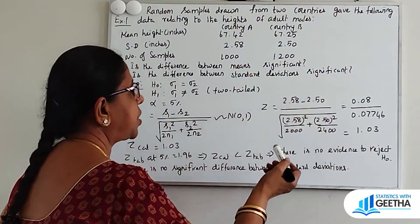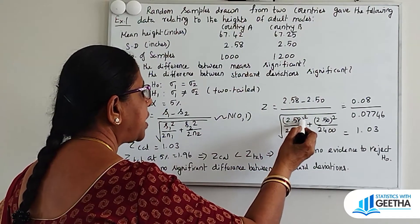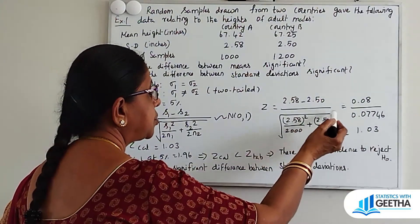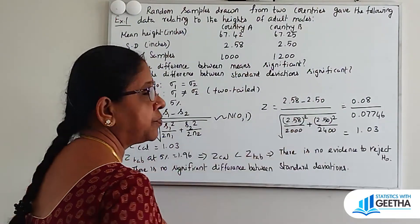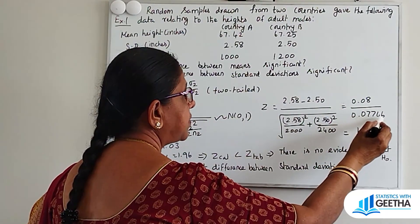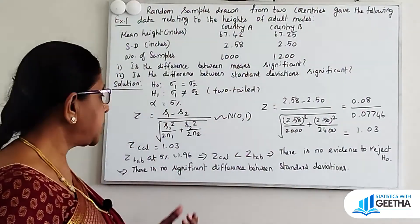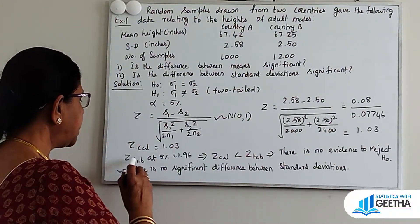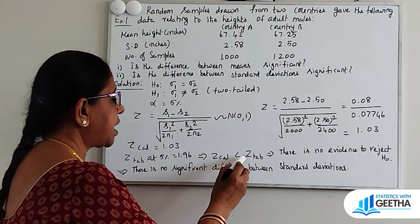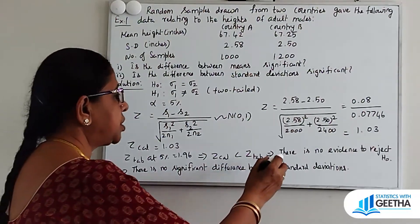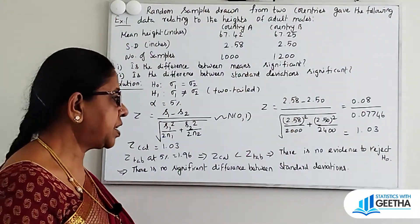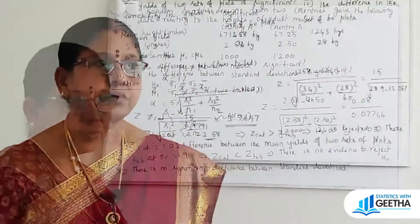Substituting: Z = (2.58 − 2.50) / sqrt(2.58² / (2×1000) + 2.50² / (2×1200)). That is: 0.08 / 0.07746 = 1.03. Z calculated = 1.03. Z table value at 5% is 1.96. Comparing both values, Z calculated < Z table value, which implies there is no evidence to reject H0. Therefore sigma1 = sigma2: there is no significant difference between the two standard deviations.